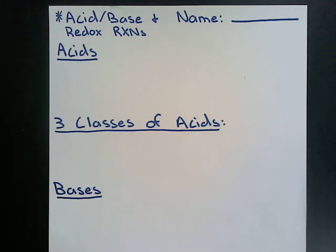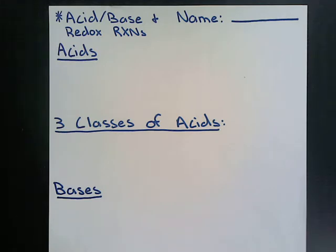Objective number one: be able to define what an acid or a base is. Objective number two: given an acid or base in a chemical reaction, you should be able to correctly predict the products. Objective number three: determine whether a chemical reaction involves oxidation and reduction. Objective number four: assign oxidation numbers to atoms, molecules, and ions. And objective number five: use the activity series to predict whether a reaction will occur when a metal is added to an aqueous solution of either a metal salt or an acid.